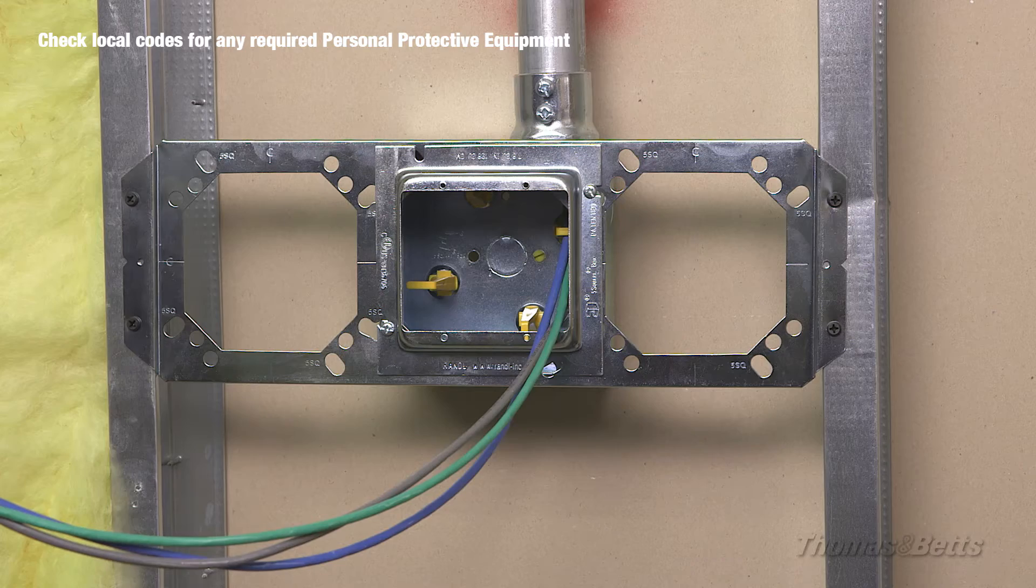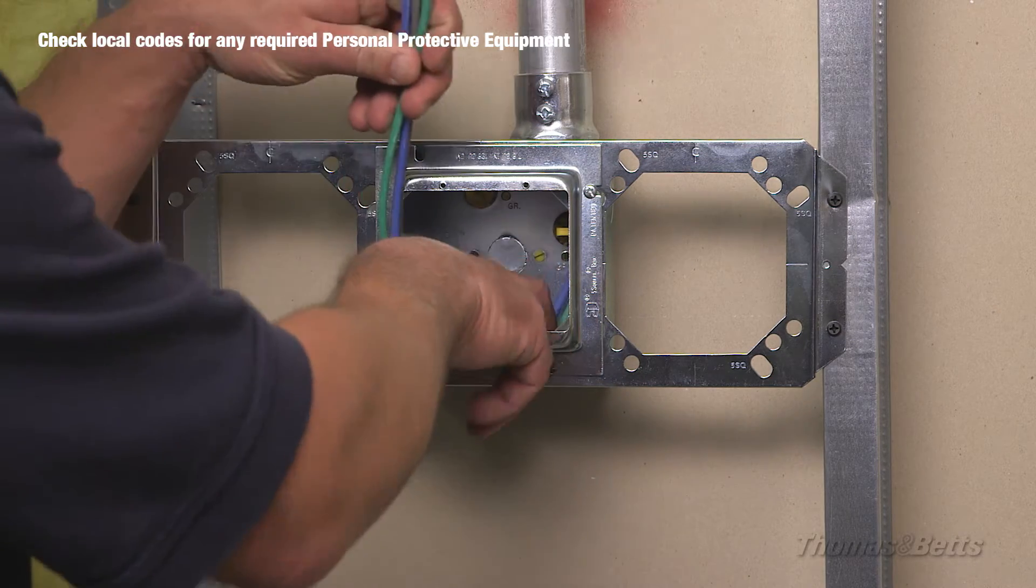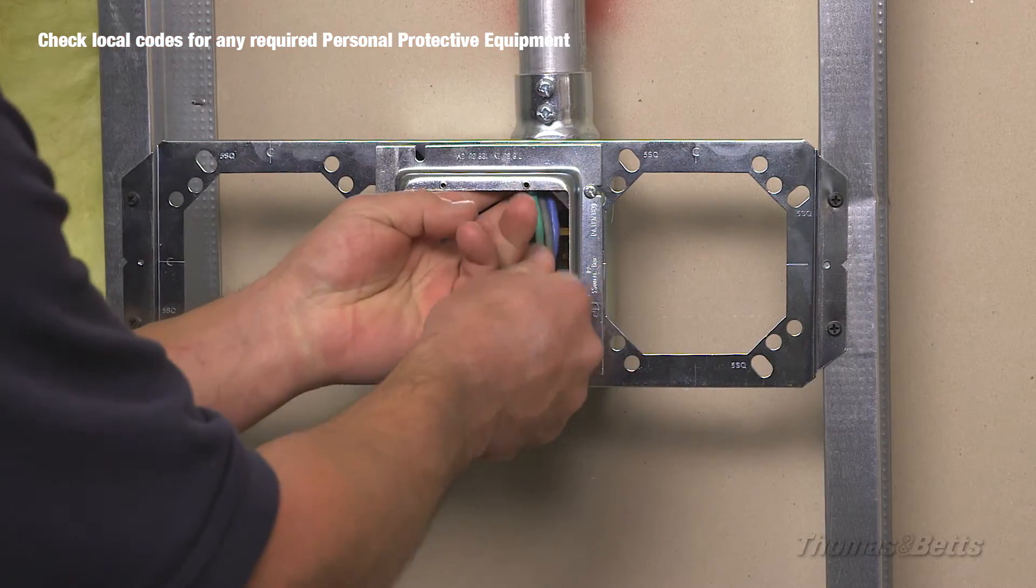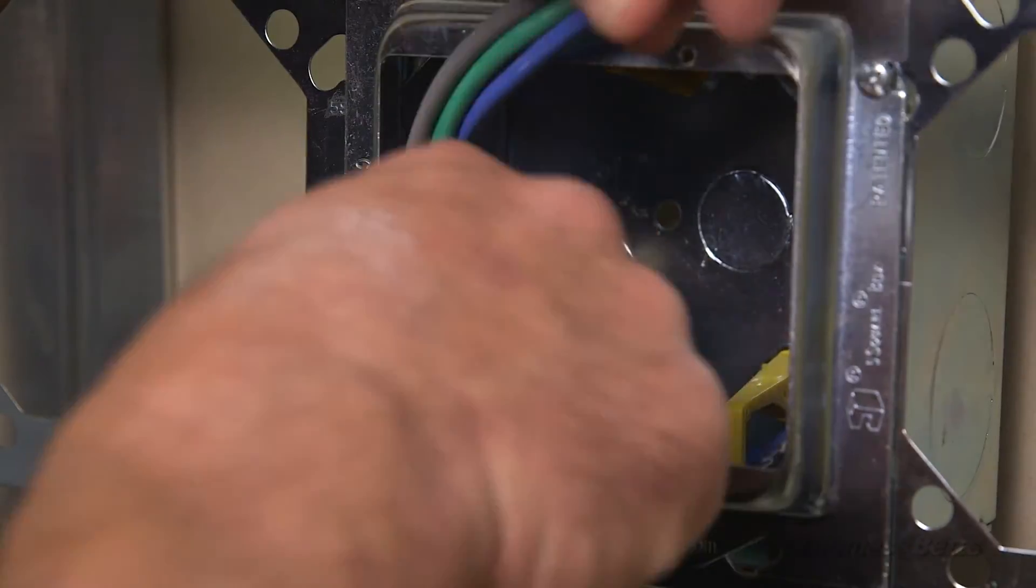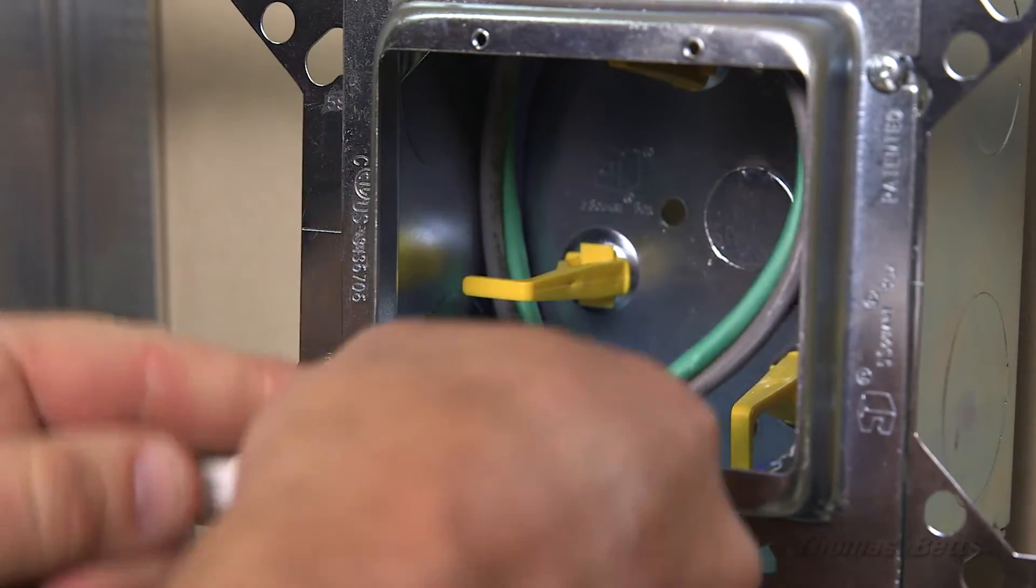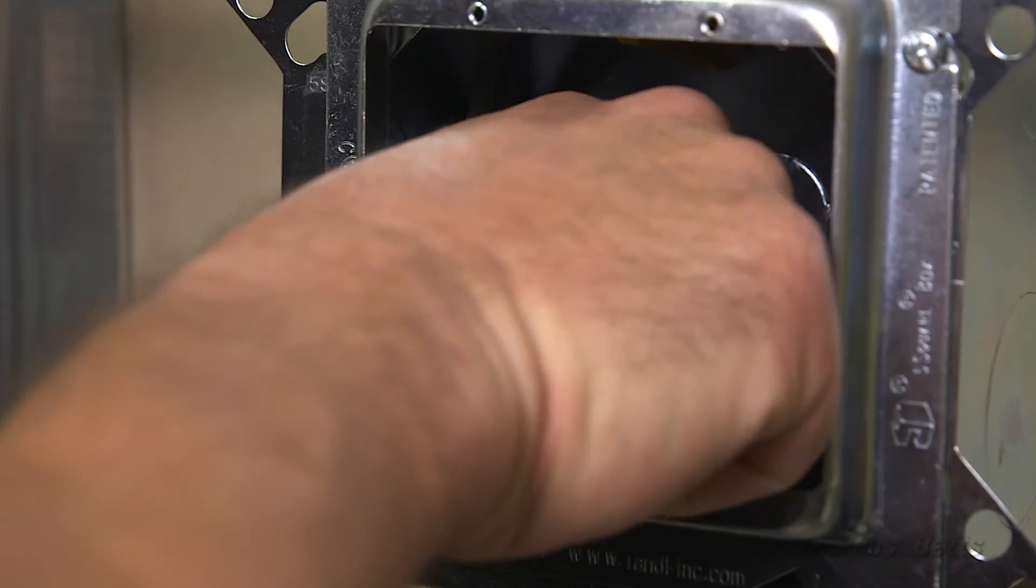For structured cabling applications, integral cable management posts allow cabling to be coiled in the box while maintaining the minimum bend radius. This meets the requirements of high-speed copper and fiber optic cabling for optimum data transmission speeds.